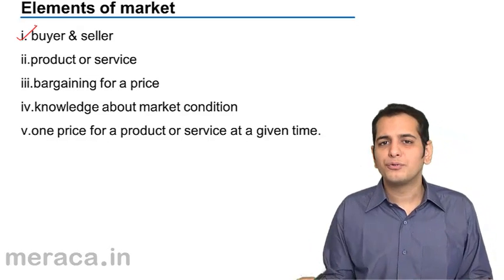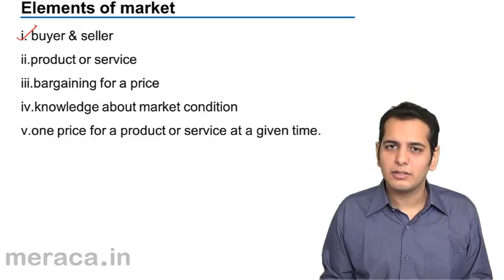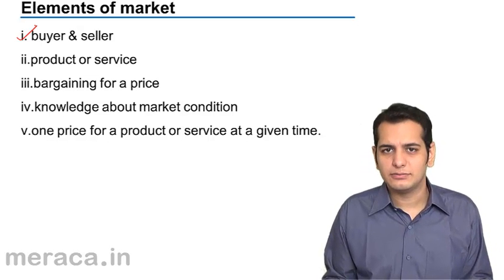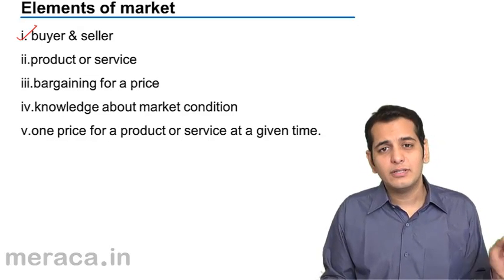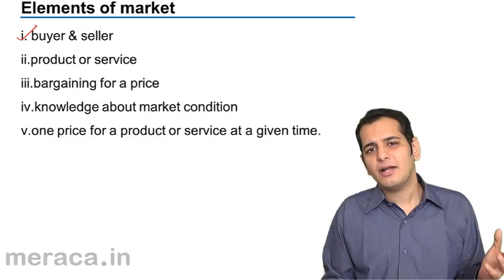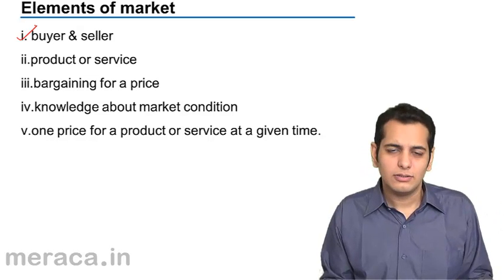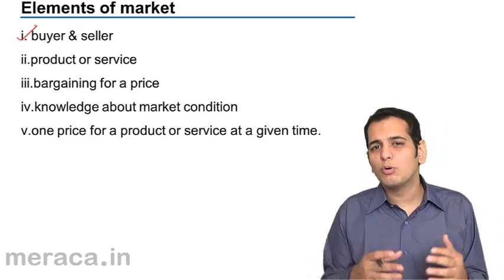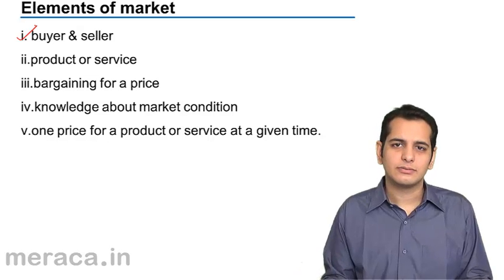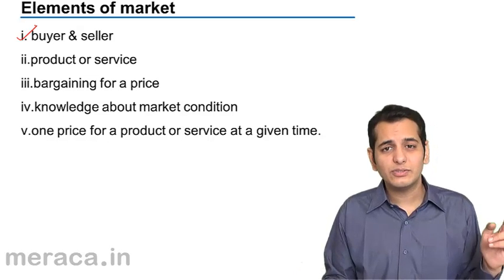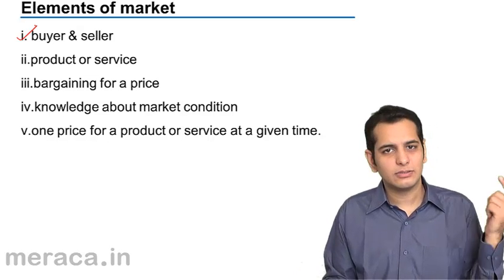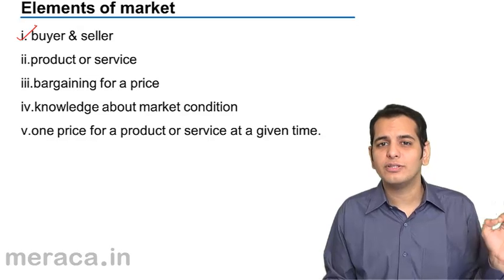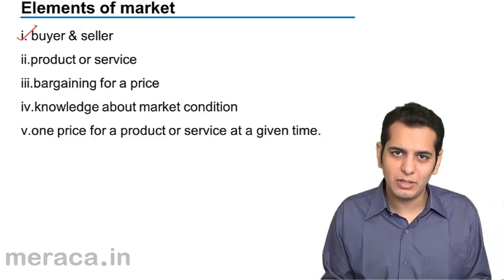First, we require two parties in a market: a buyer and a seller. Without a buyer and a seller, a market is incomplete — rather, it won't exist. So these two parties, a buyer and a seller, are imperative for the existence of the market.